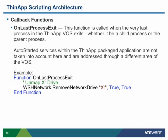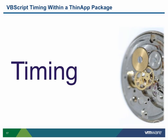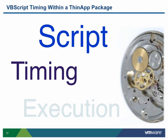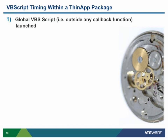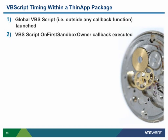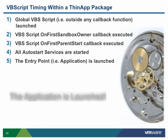The example code for the OnLastProcessExit callback function shows code for unmapping a network drive. It is important to review the timing within a ThinApp packaged application in relation to scripted solutions. Upon initial execution of a ThinApp packaged application, the first thing which occurs is the execution of any non-callback function script code. From there, all OnFirstSandboxOwner callback function script code is executed. Next, all OnFirstParentStart callback function script code is executed. At this point, the ThinApp package launches any auto-start defined services within the ThinApp package.